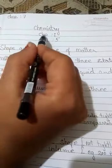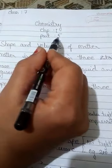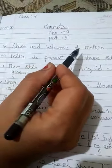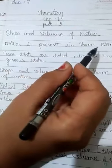Good morning students, class 7 chemistry chapter 1 part 5. Today we are going to learn about the shape and volume of matter. Matter is present in three states.